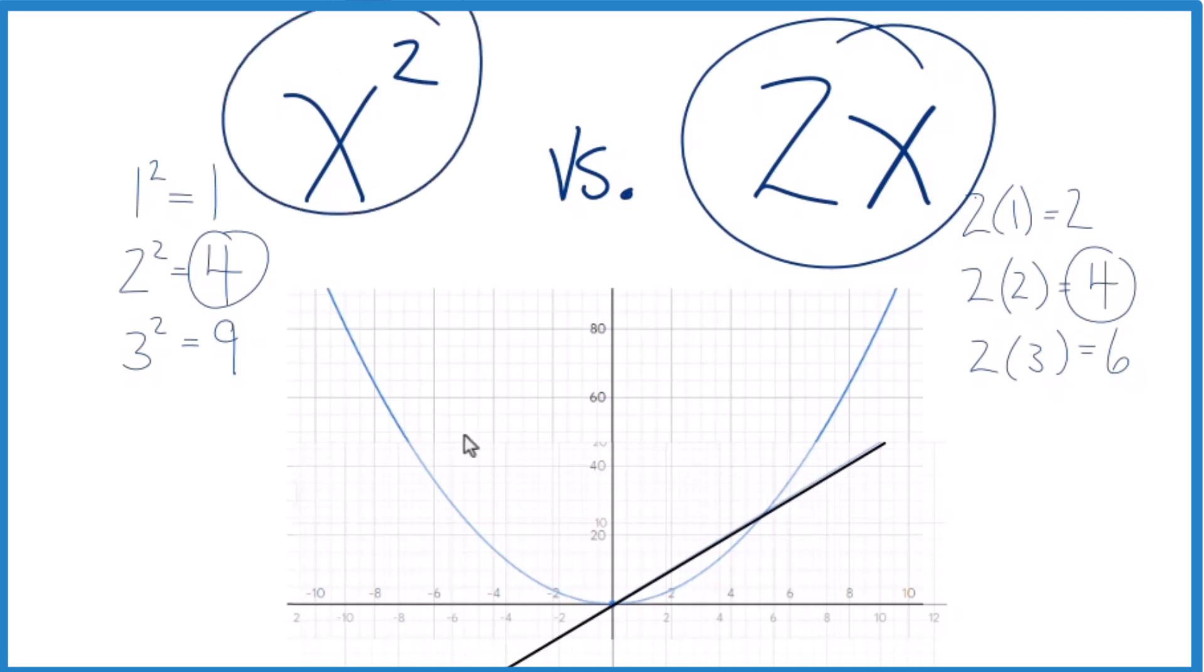But for x squared here, we're going up and it goes up pretty fast. So that's it. That's the big difference between x squared and 2x.